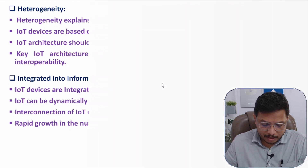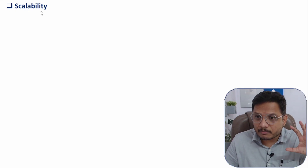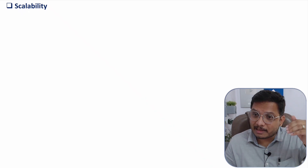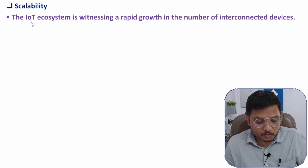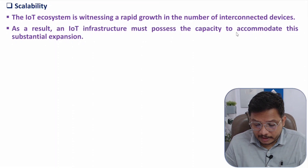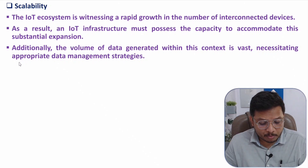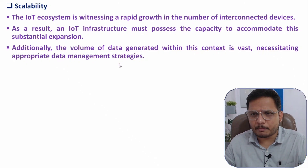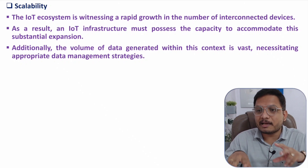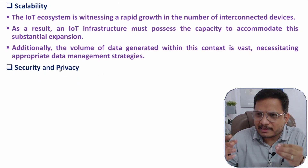Scalability is always required as many devices are added over time. The system should be scalable — it is not limited to a particular number of devices in a region. The IoT ecosystem is witnessing rapid growth in interconnected devices, so IoT infrastructure must possess the capacity to accommodate this substantial expansion. Additionally, the volume of data generated is very vast, necessitating appropriate data management strategies. As the number of devices increases, data traffic increases, so the network must be scalable.